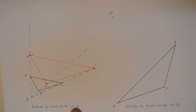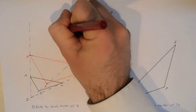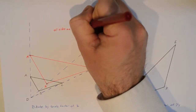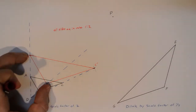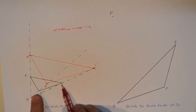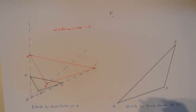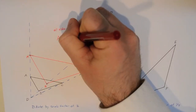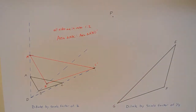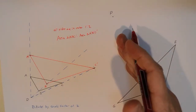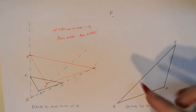Since this is a dilation of scale factor 2, all the sides are in the ratio 2 to 1. If we look at the length of side AB compared with A prime B prime, A prime B prime is clearly going to be double AB. The same applies to B prime C prime versus BC, and AC versus A prime C prime. However, the area of triangle ABC compared with the area of triangle A prime B prime C prime is not going to be double.